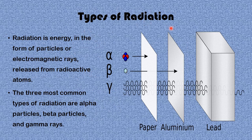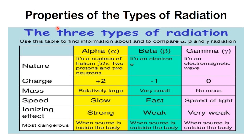What is radiation? Radiation is energy in the form of particles or electromagnetic rays released from radioactive atoms. There are three types: alpha radiation, beta radiation, and gamma radiation. Alpha radiation is stopped by a thin piece of paper, beta radiation is stopped by aluminum plates, and gamma radiation is stopped by a lead block. This describes the penetrating power of these three types of radiation.